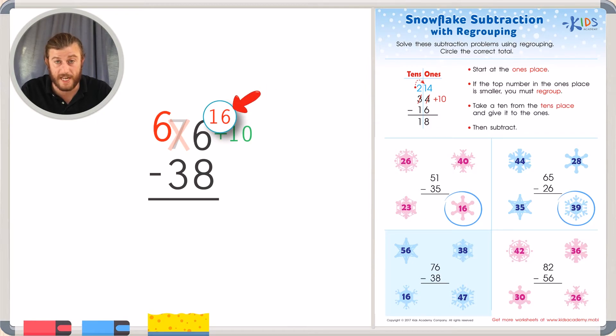Now when we subtract 16 minus 8, counting up from 8 to 16, I have 8 fingers up. 16 minus 8 is 8. And now we can just subtract in the tens place. 6 minus 3, counting up, is 3. We have an answer of 38.